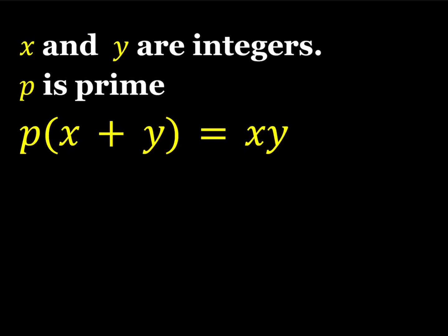Hello everyone, in this video we're going to be solving a problem from Spanish math Olympiads. X and Y are integers, P is a prime number, and we have the equation P times the quantity X plus Y equals X times Y. So we're going to be looking for integer solutions.